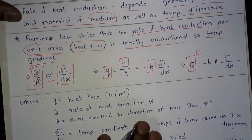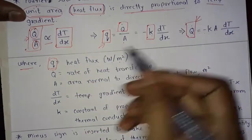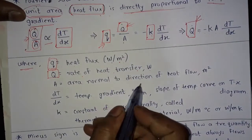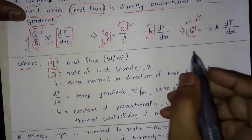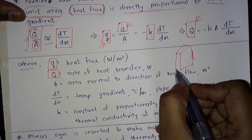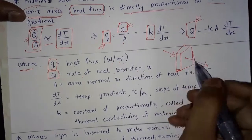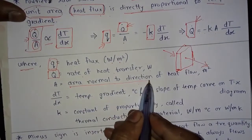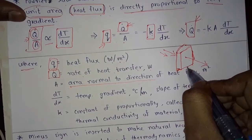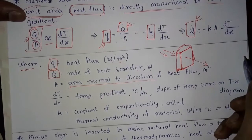Here, small q is heat flux in watts per meter square; q-dot is the rate of heat transfer in watts; A is the area normal to the direction of heat flow in meter square. For example, suppose this is a wall — heat is coming from one side, and the area normal to the direction of heat flow is this surface. You will better understand this in the example.